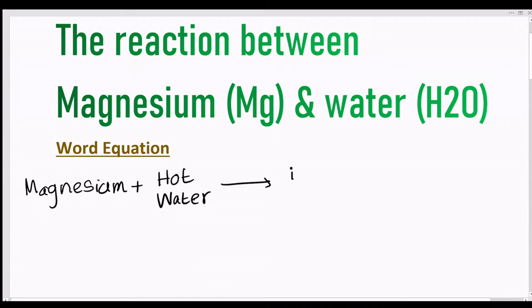When magnesium reacts with hot water, it will form magnesium hydroxide and hydrogen gas. It also starts floating due to the bubbles of hydrogen gas sticking to its surface.